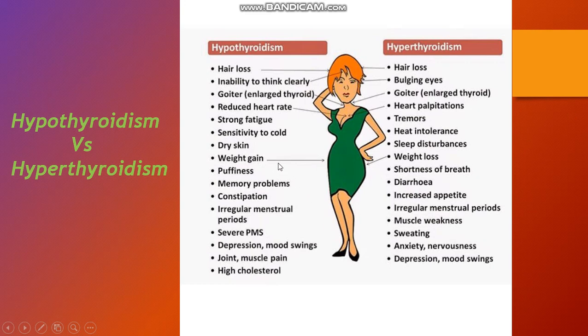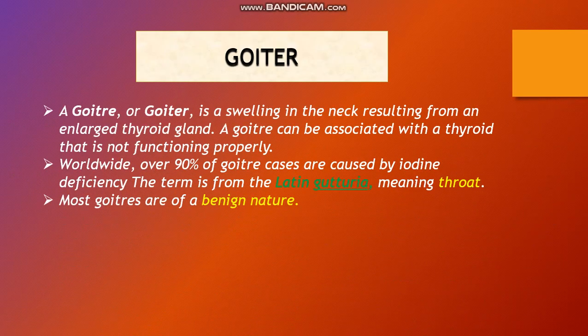This slide shows how hypothyroidism can be differentiated from hyperthyroidism on the basis of clinical presentation. Though goiter is present in both cases, it is the radioimmunoassay of T3 and T4 levels combined with clinical symptoms that distinguishes them. A goiter is a swelling in the neck resulting from an enlarged thyroid gland. Worldwide, over 90 percent of goiter cases are caused by iodine deficiency. The term comes from the Latin meaning throat, and most goiters are benign.